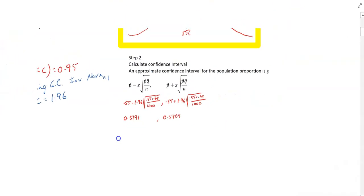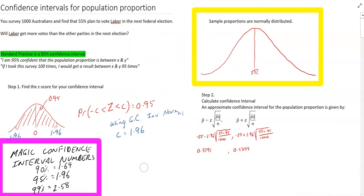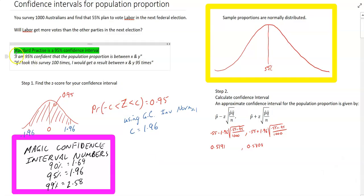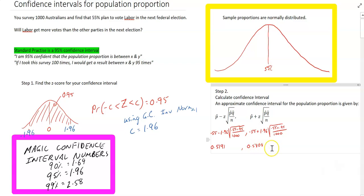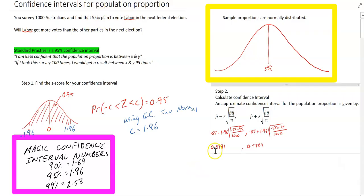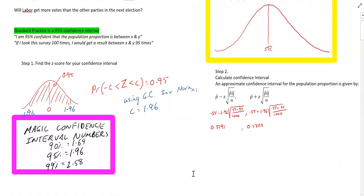So what does that mean? We've answered the question. I am 95% confident that the population proportion is between 0.5191 and 0.5808. In other words, I am 95% confident that Labor will get more votes, because they're going to get somewhere between 51.91% and 58.08% of the votes.